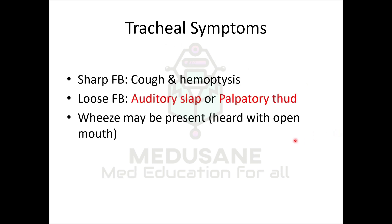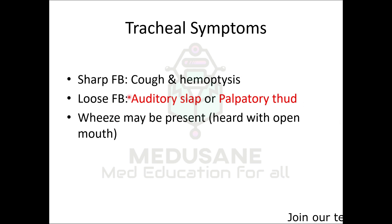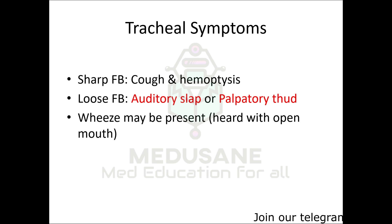If the foreign body is in the trachea, a sharp foreign body causes injury, bleeding, and hemoptysis. A loose foreign body produces an auditory slap or palpatory thud — a sound heard when the patient breathes, because the loose foreign body moves up and down between the carina and the lower surface of the vocal cords with inspiration and expiration. Wheezing sounds can also be heard with an open mouth or auscultated with a stethoscope.